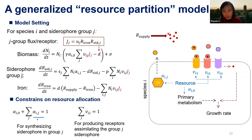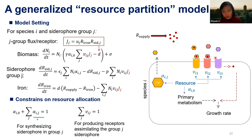Here is a more general form of the resource-competition model that becomes a resource-partition model. You have a supply of resources, and microbes actively use siderophores — or antibiotics or other means — to partition resources into different subtypes, which can then be taken up only by those with corresponding receptors. We found not only the stability criteria change, but more importantly, it is crucial to cheat — not only to collaborate and produce, but also to cheat.